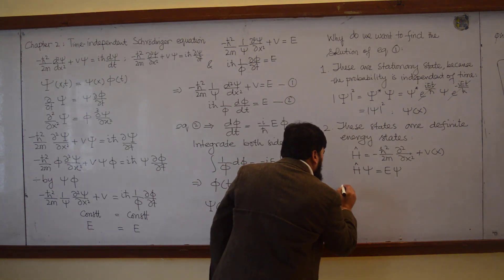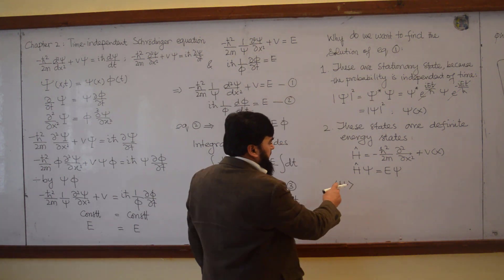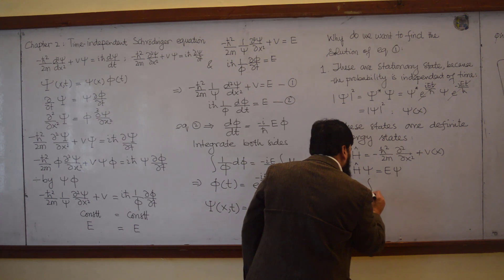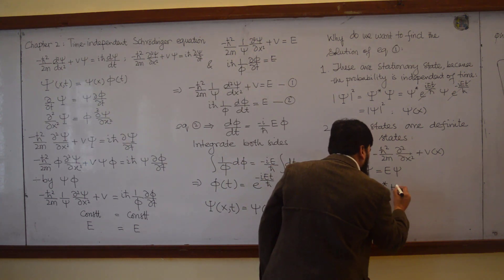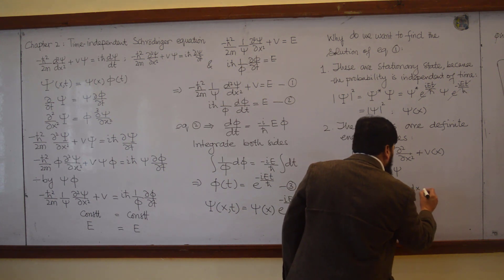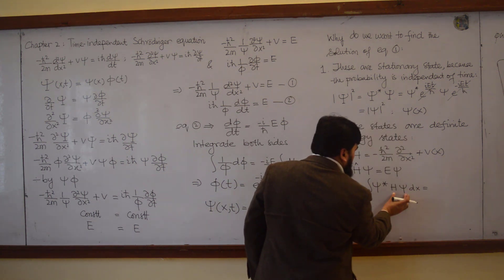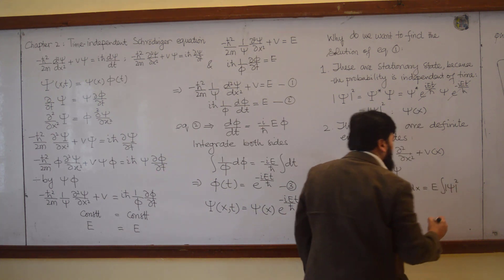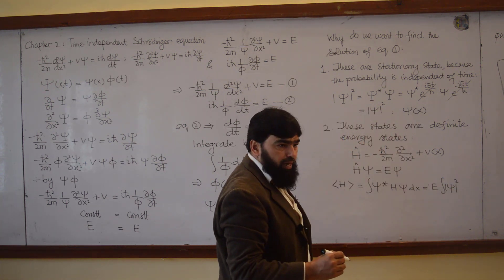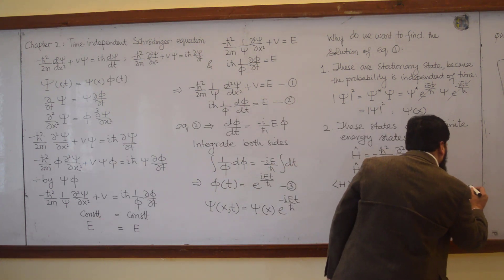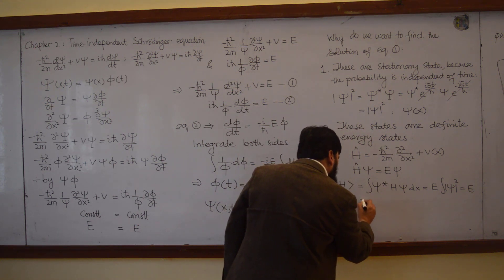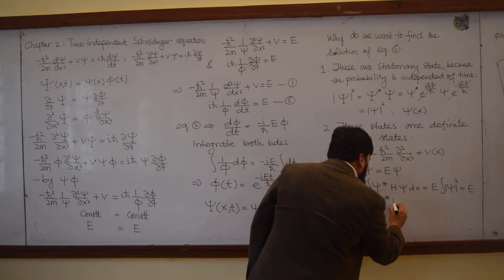If I find the expectation value of H, I write ⟨H⟩ = ∫ψ* H ψ dx. I know that when H operates on ψ it gives Eψ, so E comes out of the integral, and this becomes ∫|ψ|² dx. Since the wave function is normalized, this gives ⟨H⟩ = E.